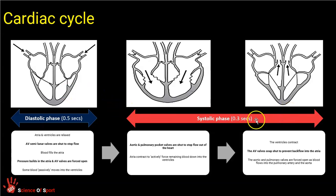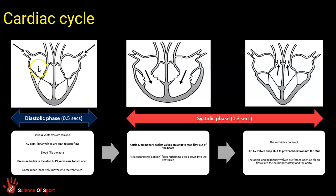Then we move into the systolic phase — the contraction phase of the heart — which actually has two sub-phases. Picking up from what has just happened, we've got some blood that has passively filled the ventricles. To get the remaining blood down into the ventricles, the atria actually contract a little bit. These two top chambers are made to contract by the heart's pacemaker, the sinoatrial node — we'll look more closely at that in the second video. So initially blood passively filled the ventricles with no contraction, and then the atria contract to squeeze the remaining blood down into the ventricles.